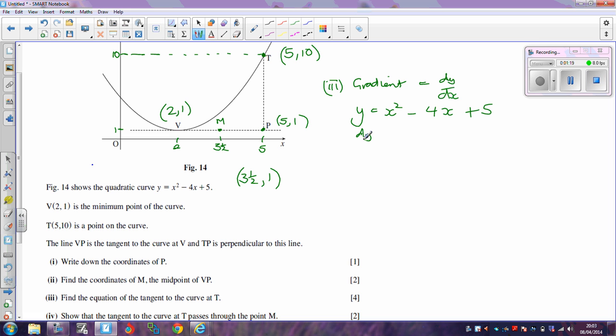which means that the gradient dy by dx is equal to 2x minus 4. Now we're looking for the gradient at this point here, where x is equal to 5, and at that point there, if x is equal to 5, then dy by dx, the gradient is going to be 2 times 5, take away 4, well that's 10 take away 4, which is going to be 6.